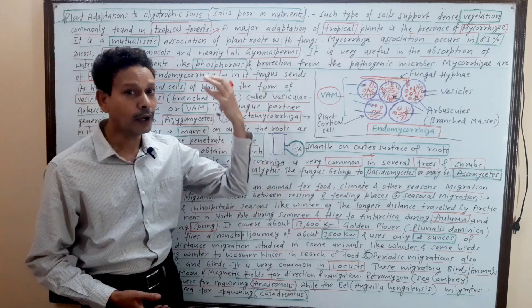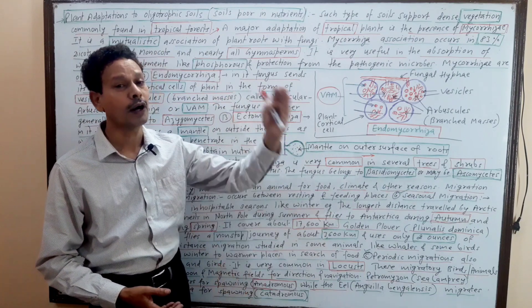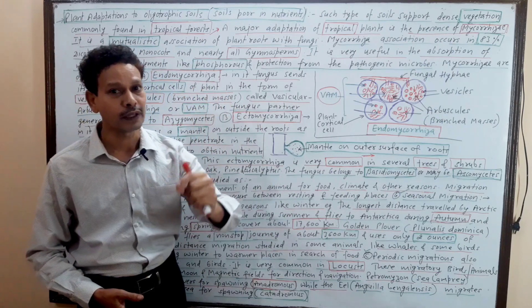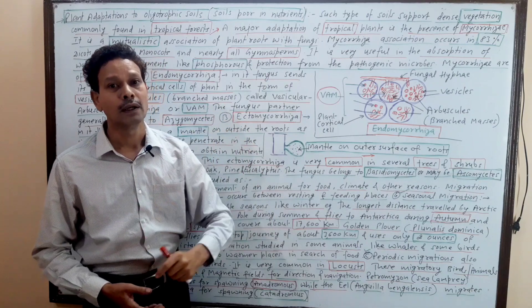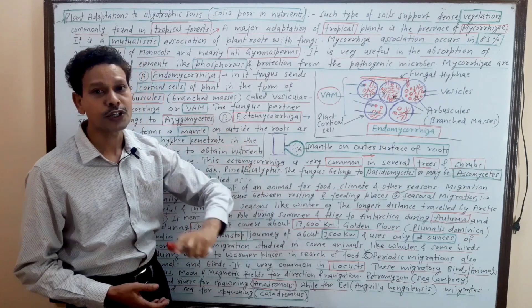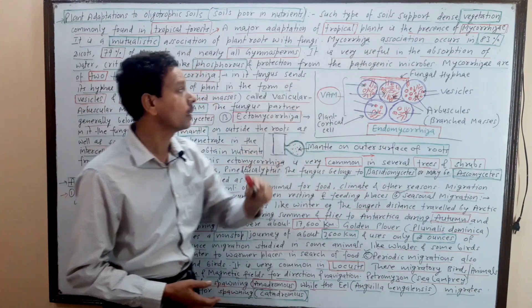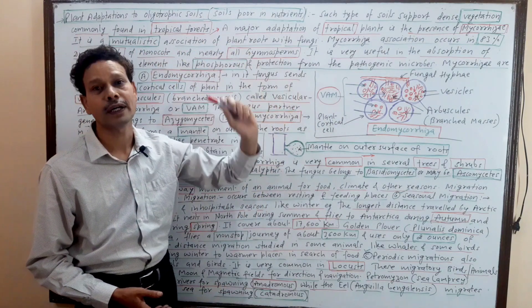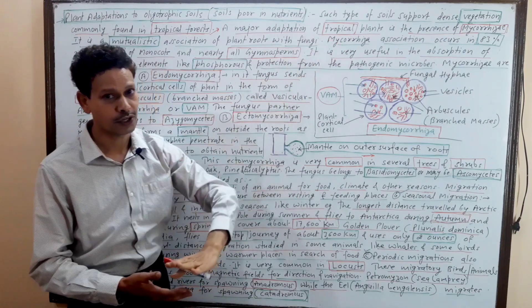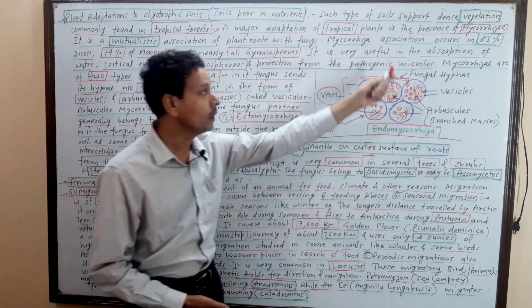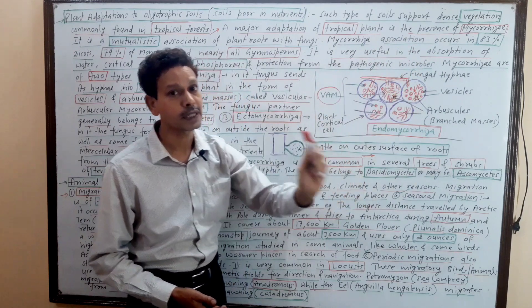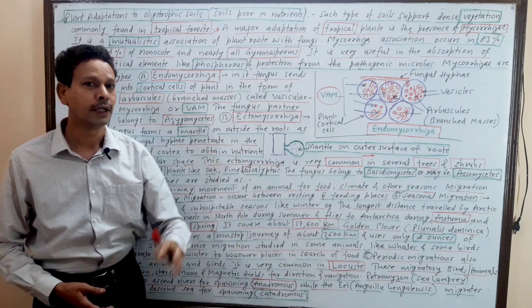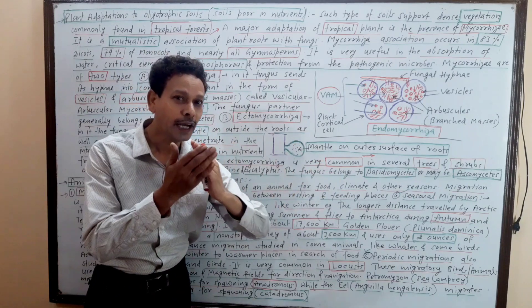When we talk about oligotrophic soil, especially plants are adapted. These are mutually symbiotically associated with fungus. Fungus hyphae, the plant roots, the network, the association - that is mycorrhizae. Mutualistic symbiotic association of plant roots with fungus. The mycorrhizae association occurs in about 83% in dicots and 79% in monocots. It means very clear, about 80% of plants.